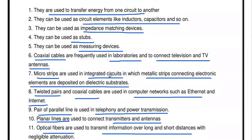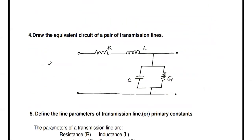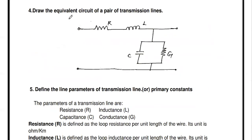The next question: draw the equivalent circuit of a pair of transmission lines for a certain distance. For a distance dx, the equivalent circuit consists of a series resistance, a series inductance, a shunt capacitance, and a shunt conductance — this is the equivalent circuit of the transmission line for a length dx.